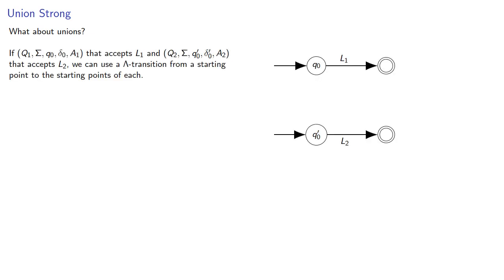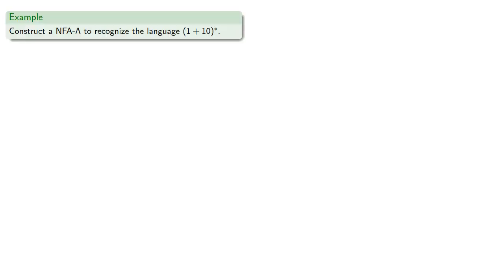What about unions? So if we have a finite automaton that accepts L1, and another that accepts L2, we can use a lambda transition from a starting point to the starting points of each. And so we can construct an NFA lambda to recognize the language like this.